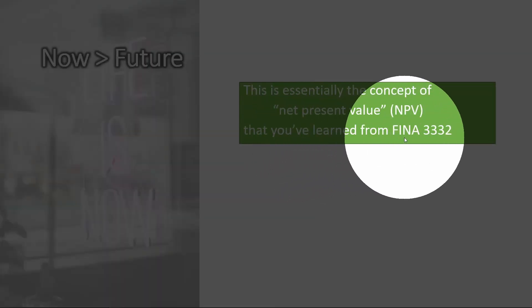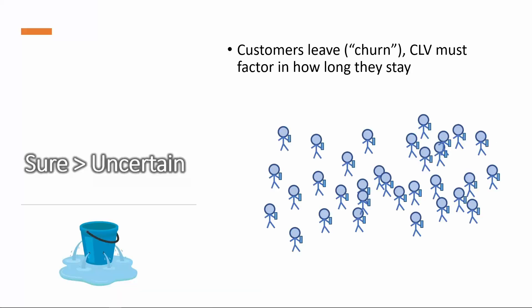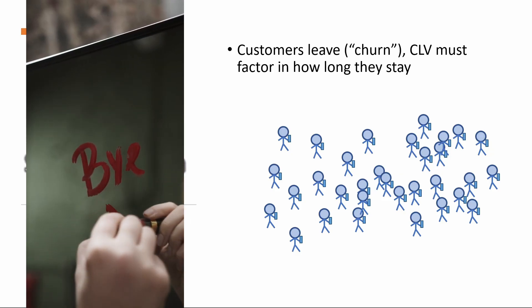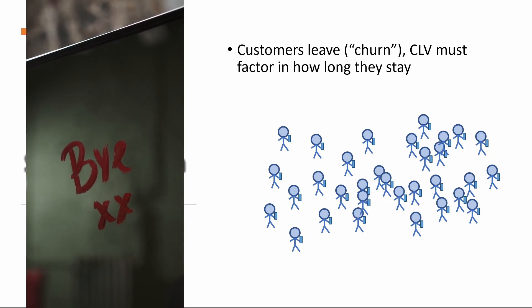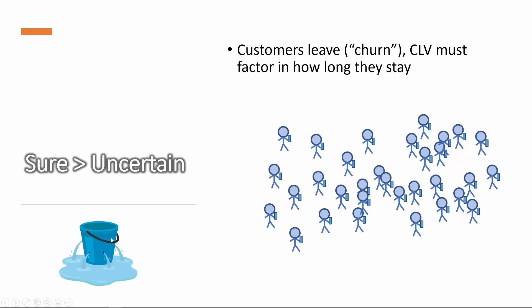We are essentially calculating the net present value of a stream of cash flows — a concept from your finance course — and here we use that same concept in marketing. We discount the future cash flow from subscriptions using an NPV calculation. The second component of CLV is sure is better than uncertain: market conditions change and customers are not always with us — they leave and stop subscribing. CLV must factor in how long customers stay, and the term for customers leaving is called churn.